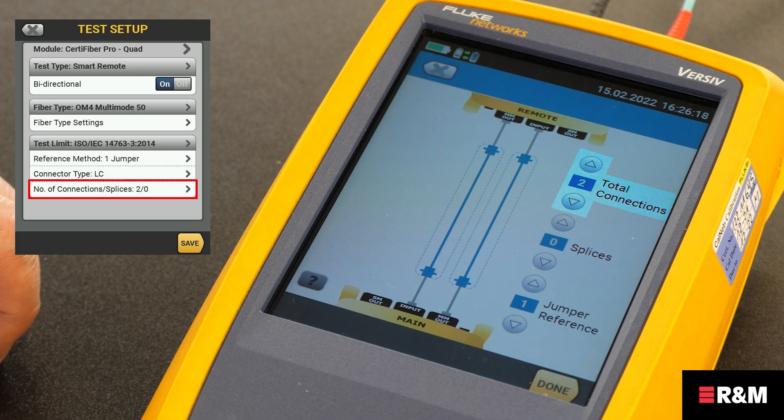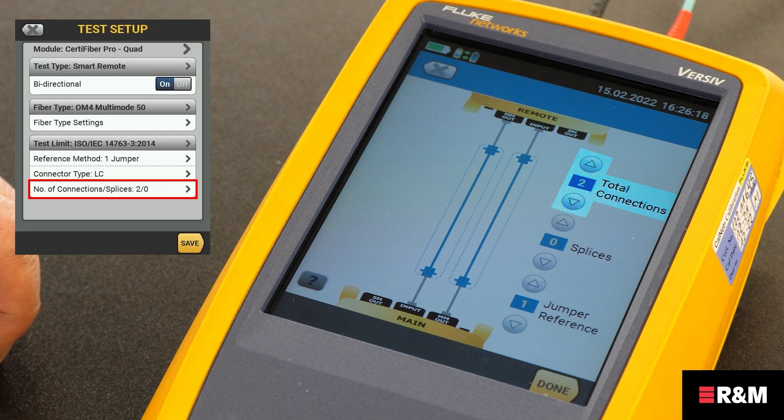The CertiFiber Pro automatically adjusts the number of connections for the reference method you use. The number of jumpers were set as part of the reference setting earlier. You must just enter the number of splices in each path of the link and hit Done when you are finished. The setup is done.